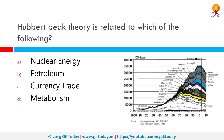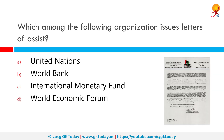Hubbert Peak Theory is related to which of the following? It's related to petroleum. The Hubbert curve is an approximation of the production rate of a resource over time. Basing his calculations on the peak of oil well discovery in 1948, Hubbert used his model in 1956 to create a curve which predicted that oil production in the contiguous United States would peak around 1970.